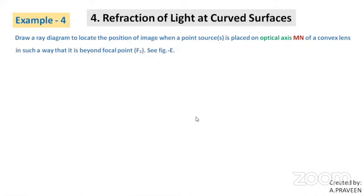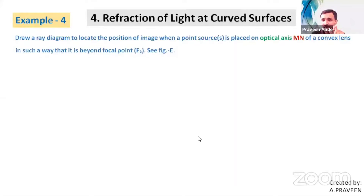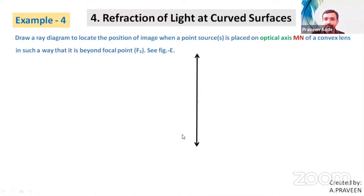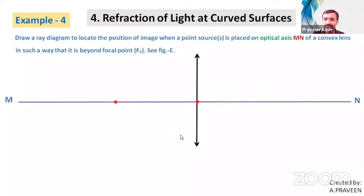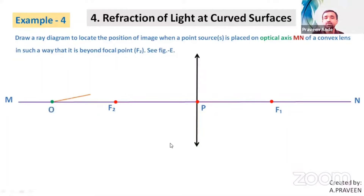The problem given is: draw a ray diagram to locate the position of the image when a point source S is placed on the optical axis MN of a convex lens in such a way that it is beyond focal point F2. The figure is also given — the optical axis MN with focal points F1 and F2 is shown, and the point source is placed at S.